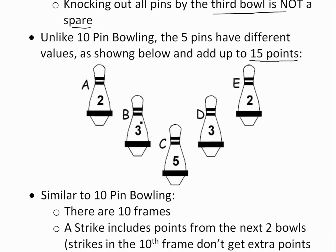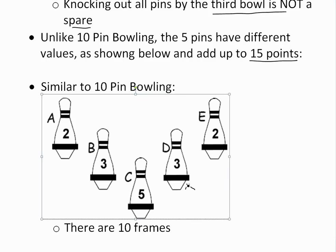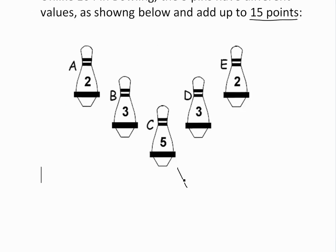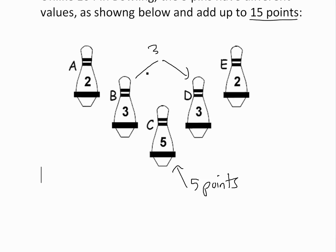Here's how the 5 pins are set up. The front pin is worth 5 points. In 10-pin bowling every pin is worth 1 point, but here the two middle pins (B and C) are worth 3 points each, and the two back corner pins are worth 2 points each — all adding up to 15.